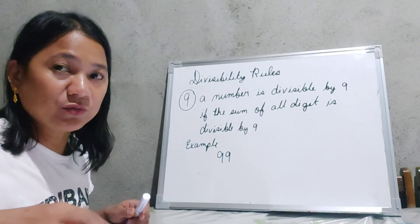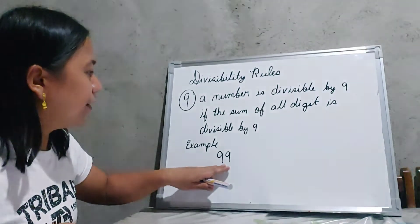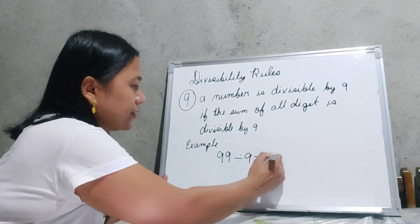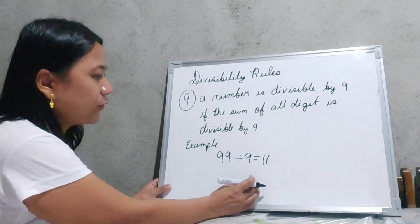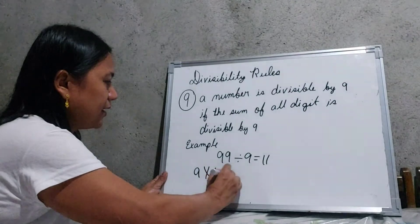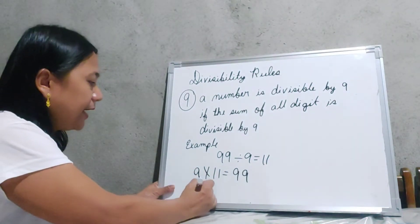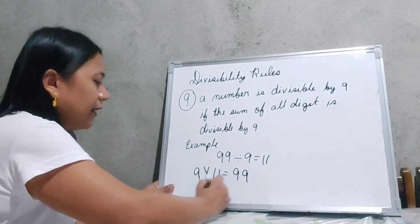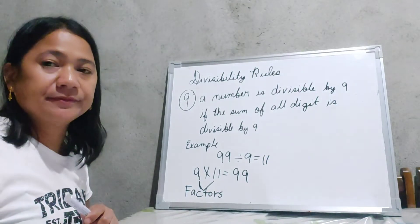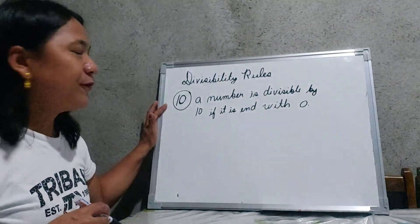Now let us find what the factors of 99 are. We divide 99 by 9 and it gives us the quotient 11. Afterwards, we multiply 9 and 11, and 9 times 11 gives us 99. Therefore, 9 and 11 are the factors of 99.